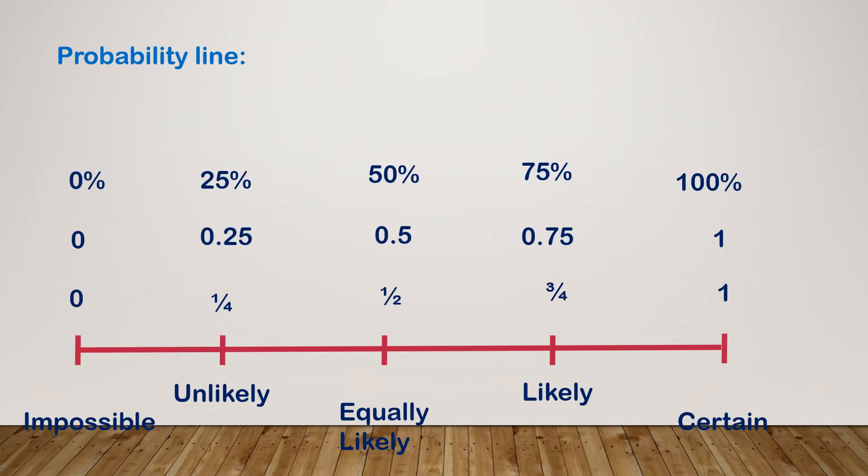Probability can be expressed on a probability line or a probability scale. Now this ranges from impossible all the way to certain. So impossible is the fact that there's no chance of that thing happening, whereas certain is that it's the only thing that could happen.